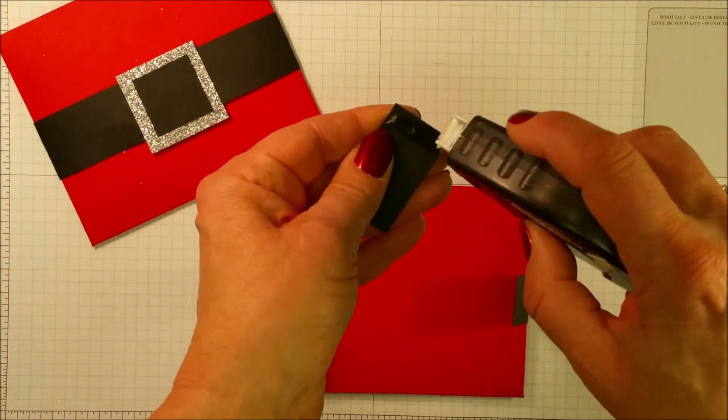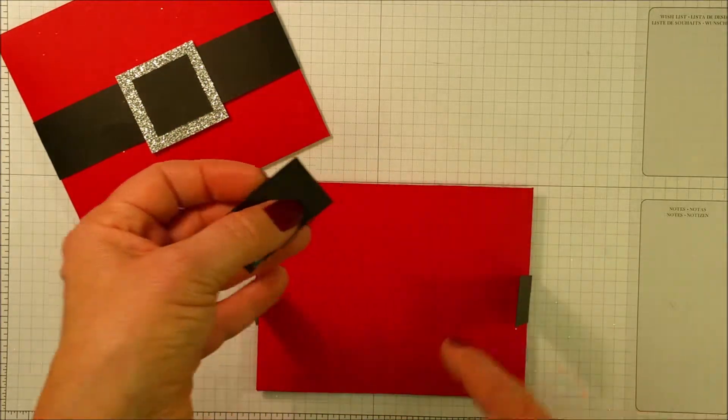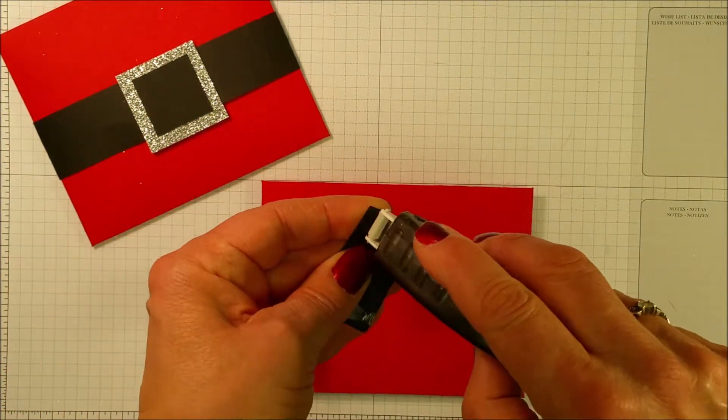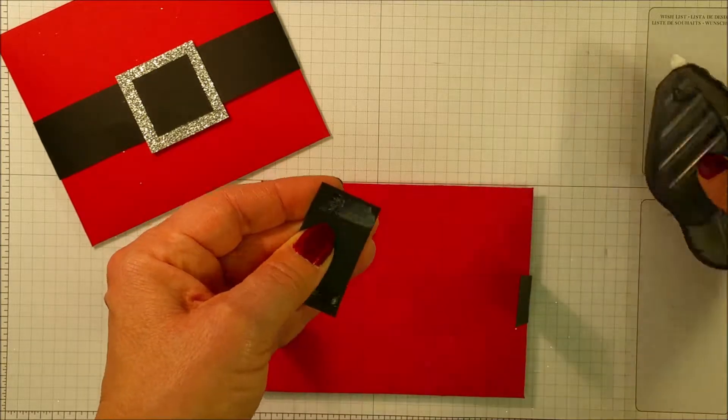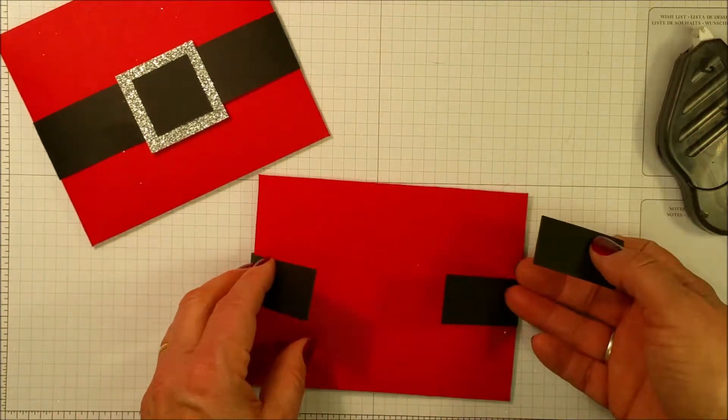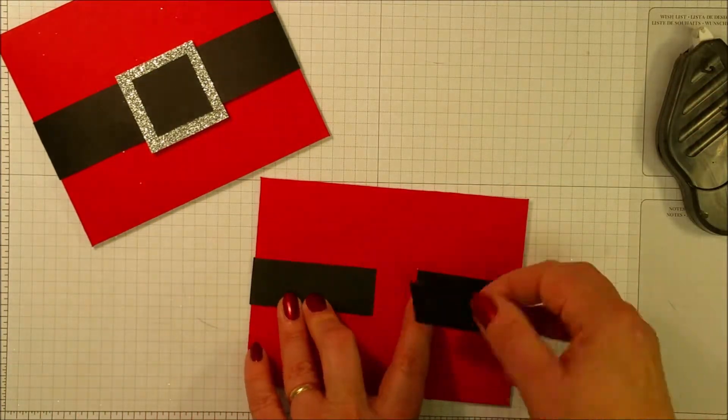Now, I don't want the belly band to stick to the envelope. I want it to be able to slide on and off. So that's why I'm putting the tape just on the sides.